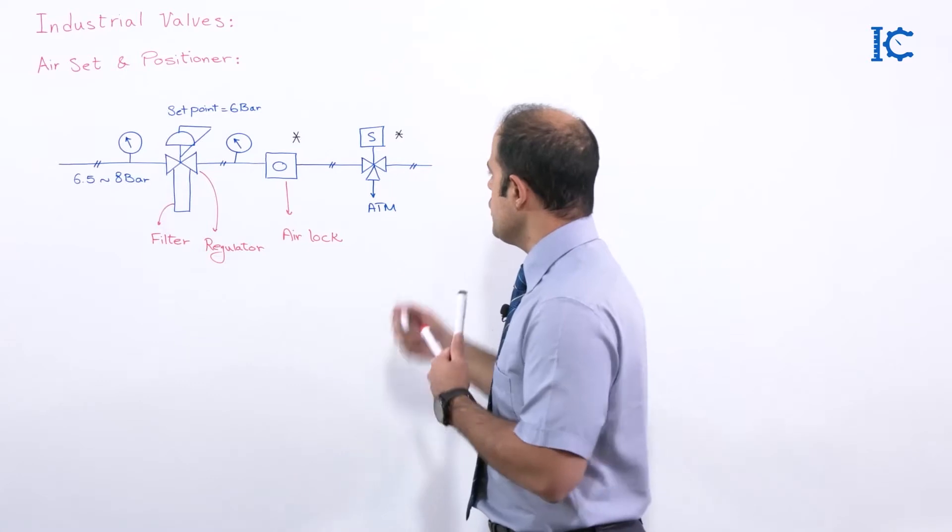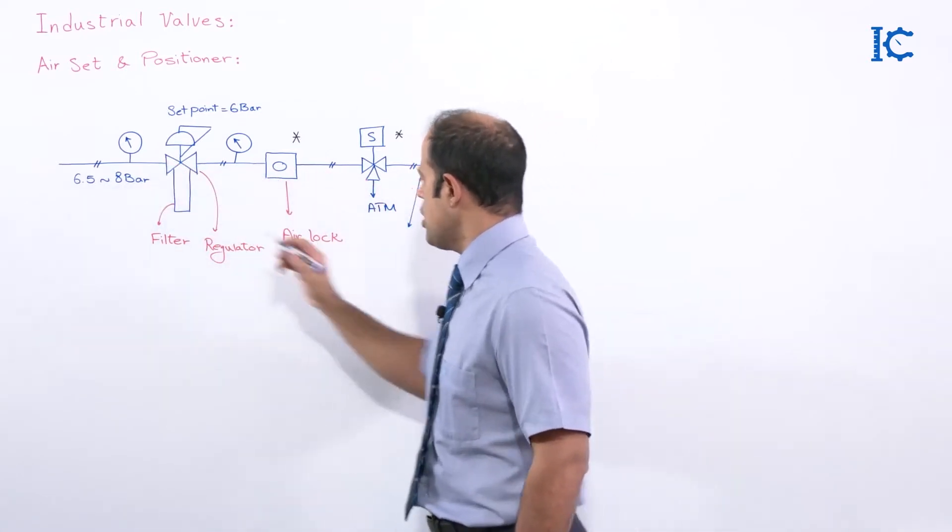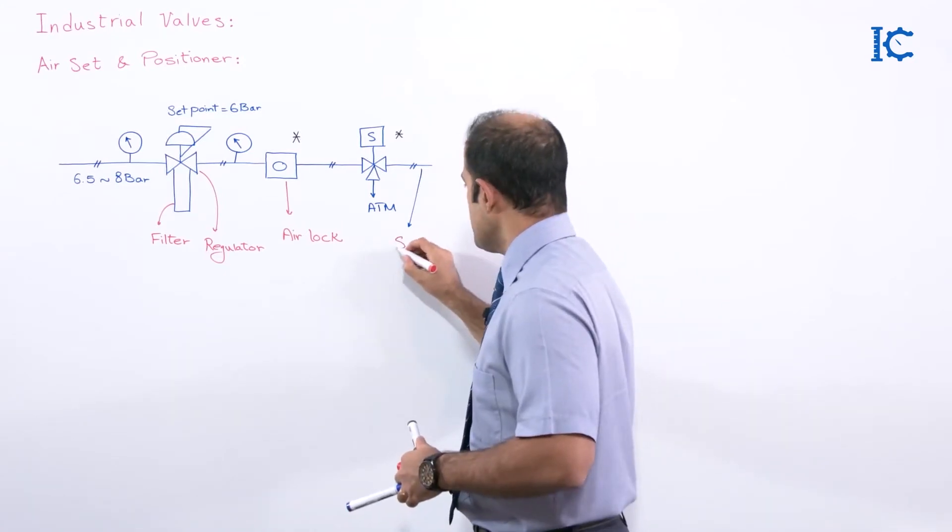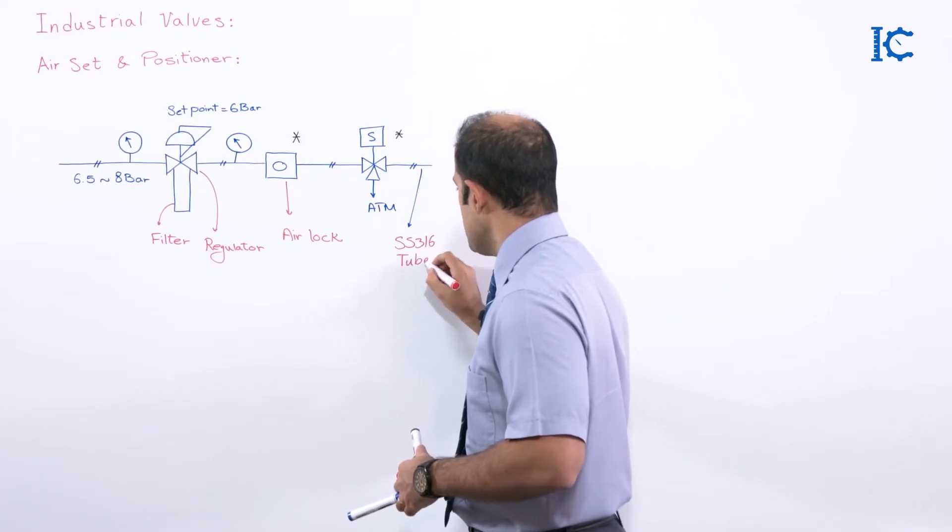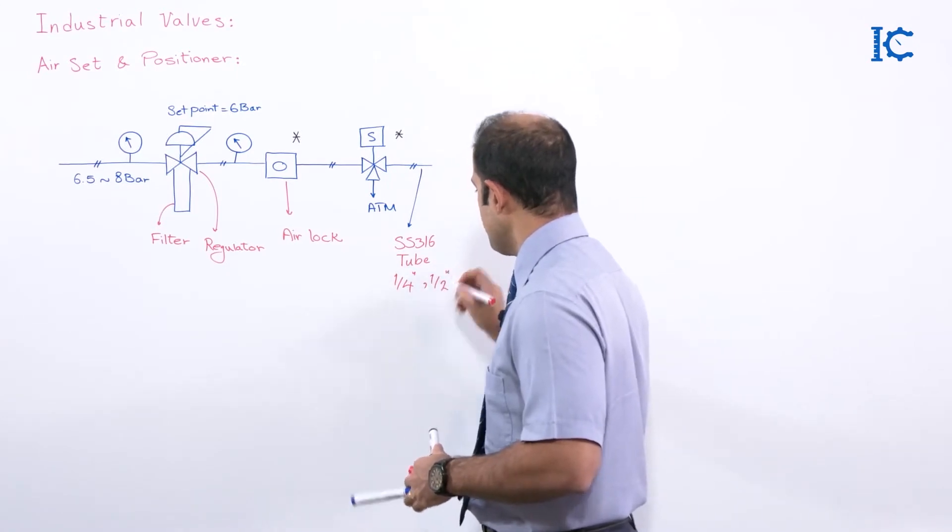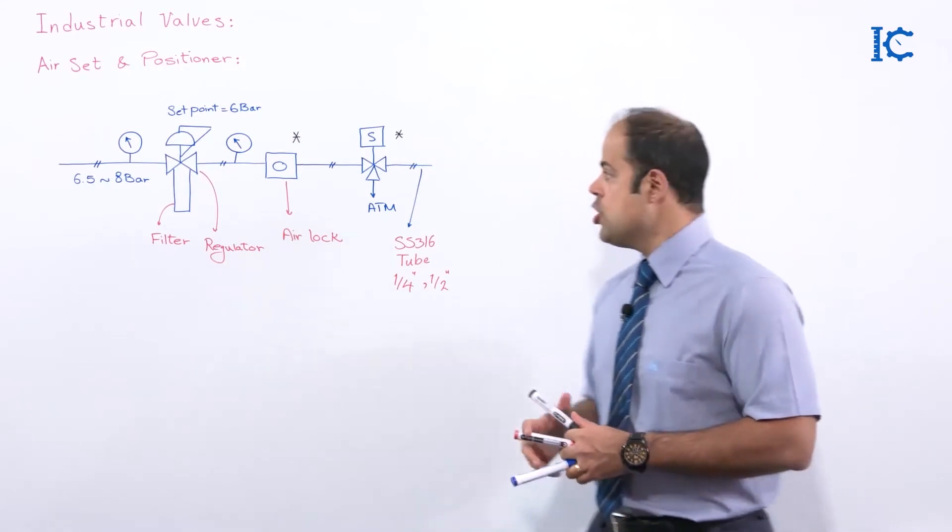And the tubes that we have here, all these items are stainless tube. Let me just write it in red color. These are stainless steel 316 tube and the size of it can be quarter of inches or half of inches. Both of them can be possible. Sometimes we can use 3/8 inches too.